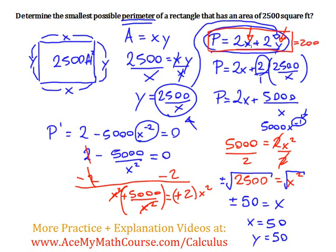So we're going to end up with 200. That's 2 times 50, 100. Plus 2 times 50, 100 again. So if we have a square with an area of 2,500 square feet. The smallest possible perimeter is 200 feet. That's it.